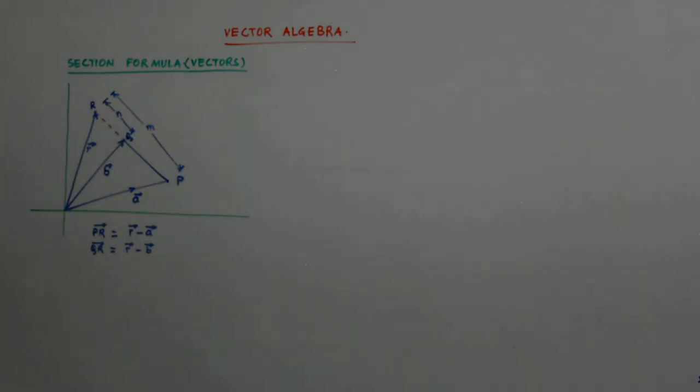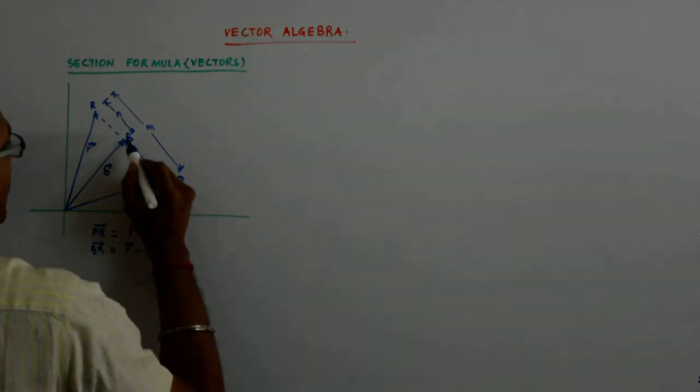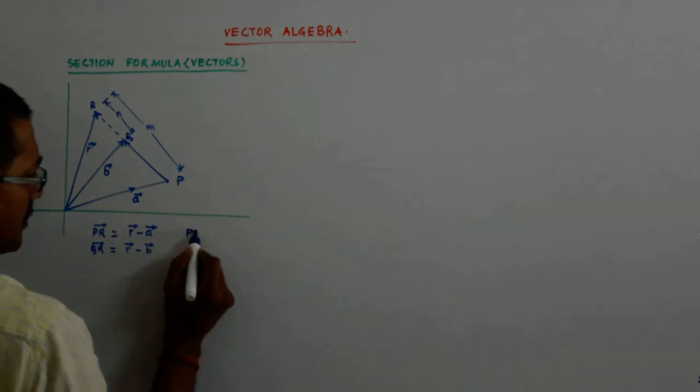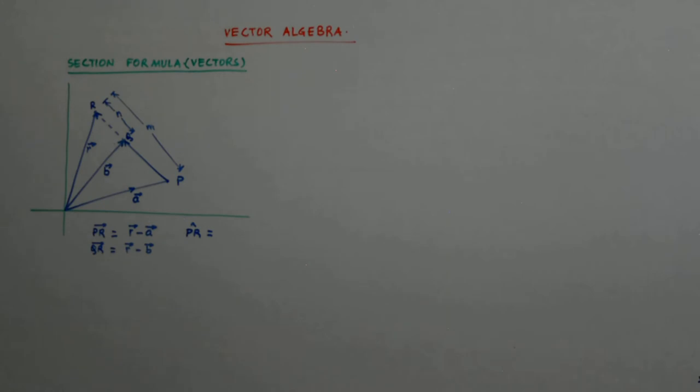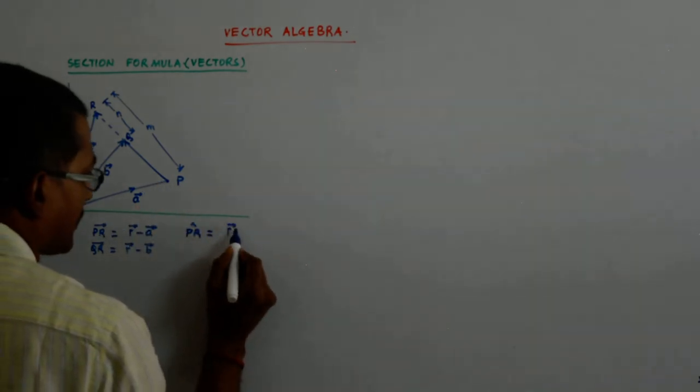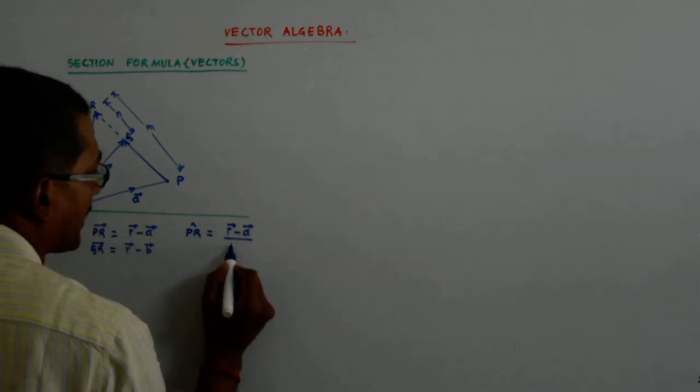Now what? QR we have here, PR. Now what do I do? I again do the same thing. What is PR cap? The length of PR is M. So it is R minus A upon MK.